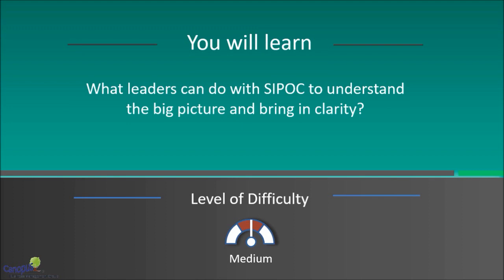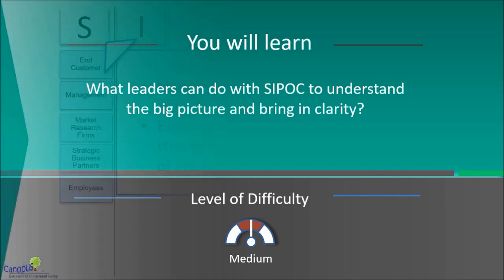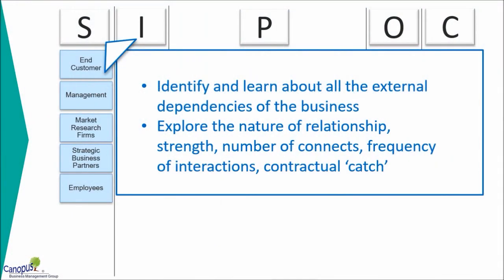Now that we've learned about how to create a SIPOC, we will talk about what leaders can do with SIPOC to understand the big picture and bring clarity for your team and for yourself. Let's go one by one into each of those five different elements — suppliers, input, process, output, and customers — and talk about what you could do uniquely in each of those.